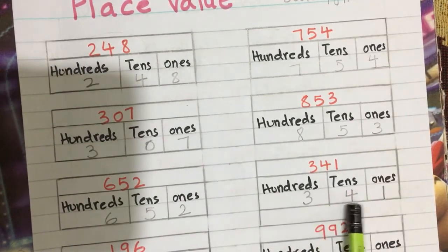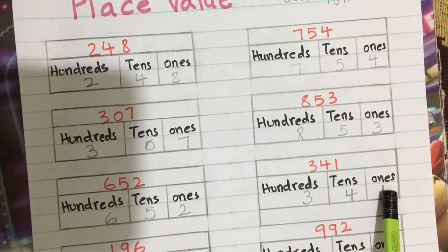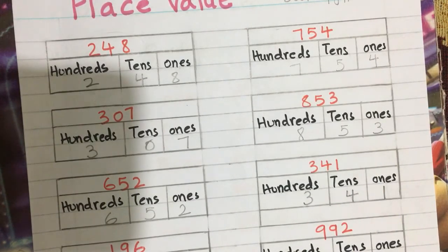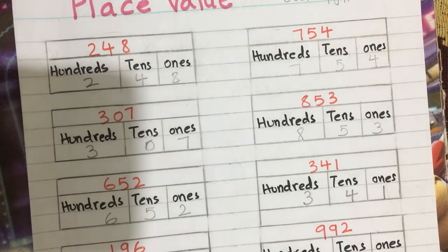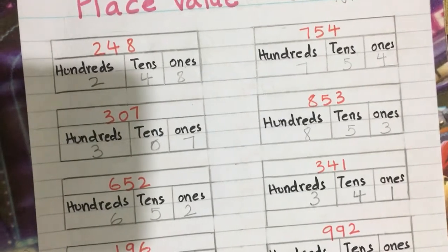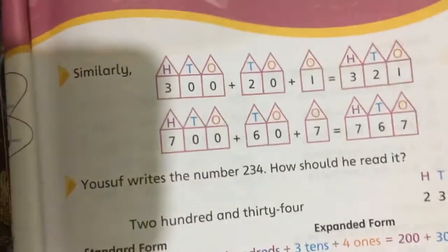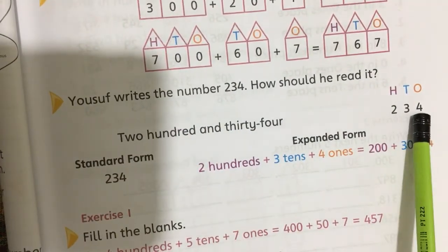The number 341 has three hundreds, four tens, and one ones, so this number is three hundred and forty-one. In your book, page number 16, there is the number two hundred and thirty-four.